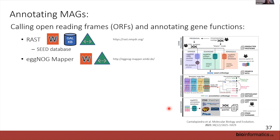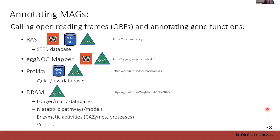Common annotation tools include RAST and EggNOG — cool things about these are their online portals where you can upload assembled scaffolds or MAGs, and they'll annotate them and either provide a web portal or send you tables by email. Prokka and DRAM are the two main ones we put into the workshop. Prokka is pretty quick, doesn't use too many databases, and is mostly command-line. DRAM requires more databases but does a lot of neat things — it gives you more tools for looking at metabolic pathways, modeling, and assessing completeness and aggregate function of the genome.